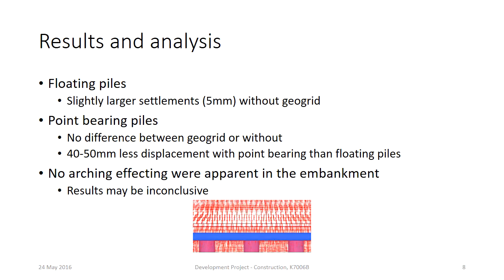The calculations showed that floating piles, or friction piles, had larger settlements than point-bearing piles. The use of geogrid proved to be of little significance for displacement; friction piles without geogrid settled slightly more than models which used it, while for point-bearing piles no difference was found. However, the theorized arching behavior sought in the basal reinforced pile embankment was not apparent in any model computation, as can be seen in the figure. Since the point of stress arches is to reduce settlements, the displacement results might be inconclusive.